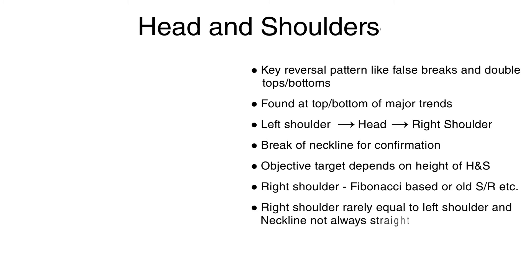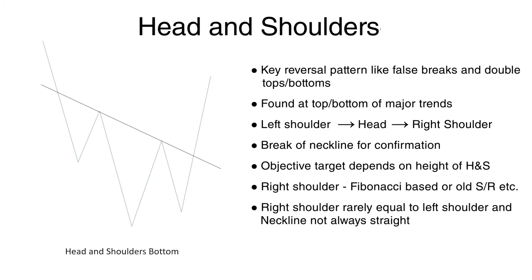Head and shoulders patterns are rarely symmetrical — most of the time the right shoulder is either bigger or smaller in height and/or width than the left shoulder. Also, the neckline is barely straight, as you can see in the example of the head and shoulders bottom formation, which is the exact opposite of the top formation discussed before. Now let me walk you through some examples on the charts to discuss exactly how we look for trades using the head and shoulders pattern.